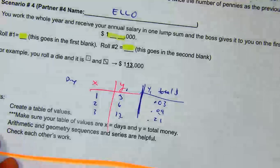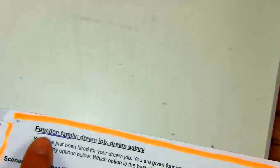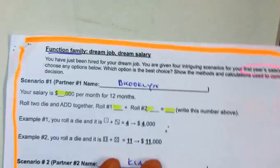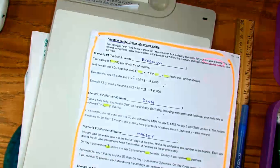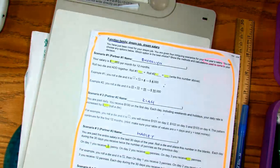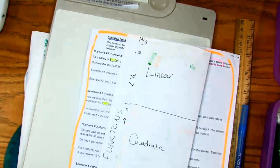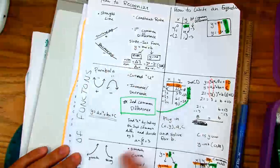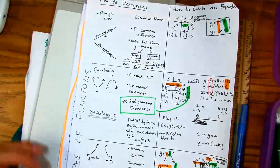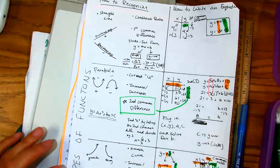Now here's the other thing. This project is called the Function Families. We did a graphic organizer called the Function Families — linear, quadratic, or exponential — and it actually helps you write equations. Why would you want to know an equation? Well, it might help you figure out all the days or months that you need to know.